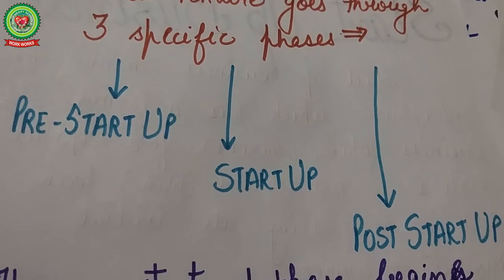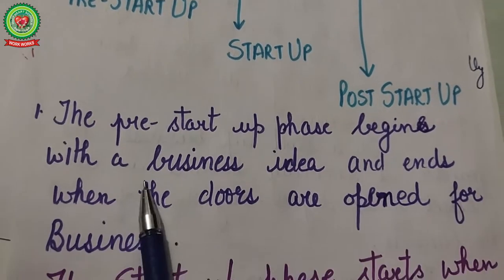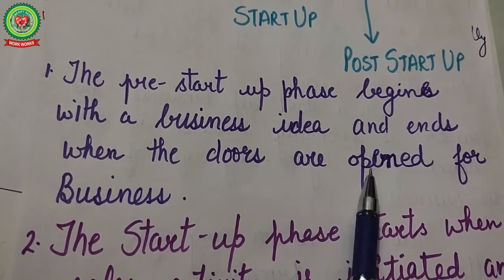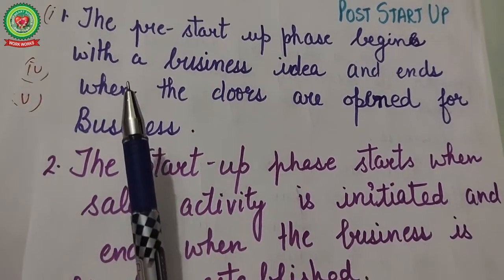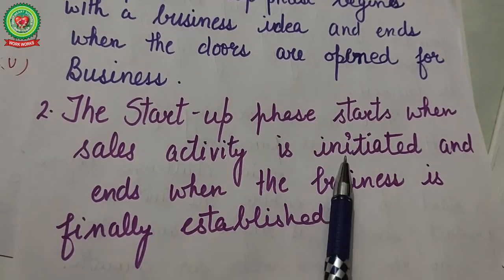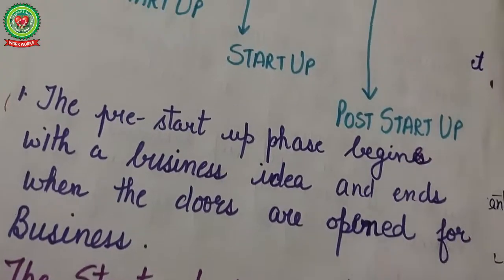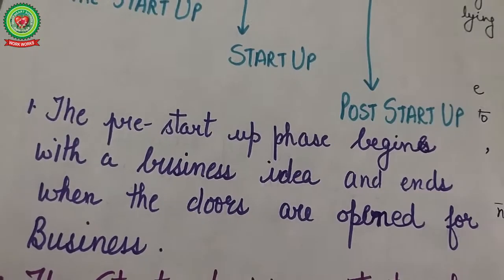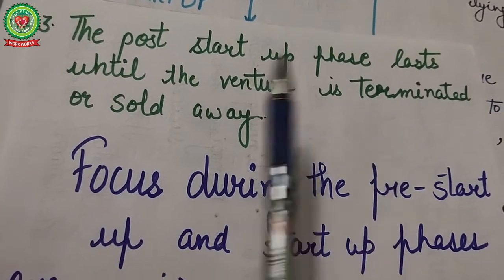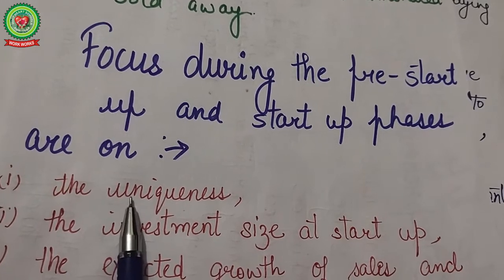A new venture goes through three specific phases: the pre-startup phase, the startup phase, and the post-startup phase. The pre-startup phase begins with the business idea and ends when the doors are open for business. The startup phase starts when sales activity is initiated and ends when the business is finally established. The post-startup phase lasts until the venture is terminated or sold.